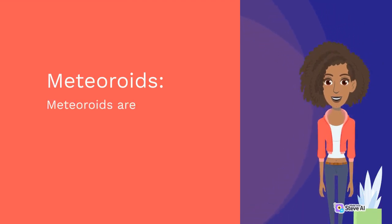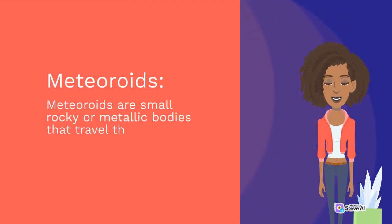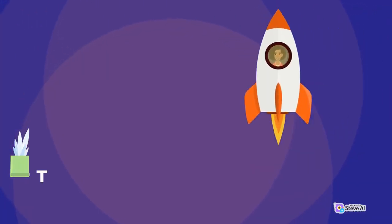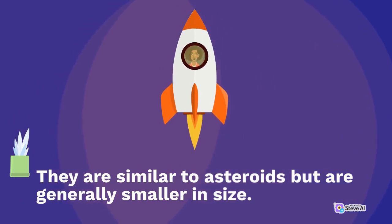Meteoroids are small rocky or metallic bodies that travel through space. They are similar to asteroids but are generally smaller in size.